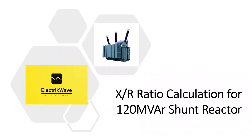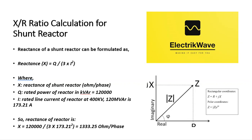Now let's discuss the X by R ratio calculation for a 120 MVAR, 400 kV shunt reactor. Reactance of a shunt reactor can be formulated as X equals Q divided by 3 times I squared, where X is reactance in ohm per phase, Q is rated power of reactor in kVA (120,000 kVA), and I is rated line current at 400 kV, 120 MVAR, which is 173.21 A. So reactance of reactor X equals 120,000 divided by (3 × 173.21²) equals 1333.25 ohm per phase.